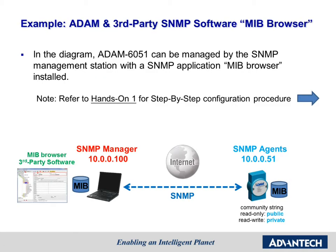There are three hands-on exercises. First, we use the third-party SNMP software MIB Browser and get some remote I/O data by sending a query. As you can see, ADAM 6051 can be managed by the SNMP manager with the third-party software MIB Browser installed in the laptop. The MIB Browser has to load the MIB file. We will demo how to use the third-party SNMP software to query SNMP data of ADAM in the first hands-on.